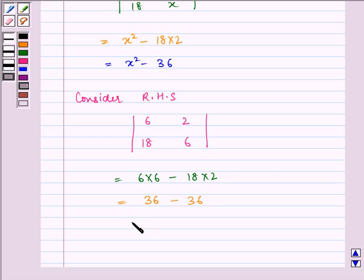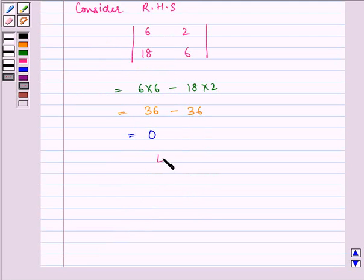which equals 0. Now equating LHS equals RHS, we get x² - 36 = 0, which implies x² = 36, which implies x = ±6.